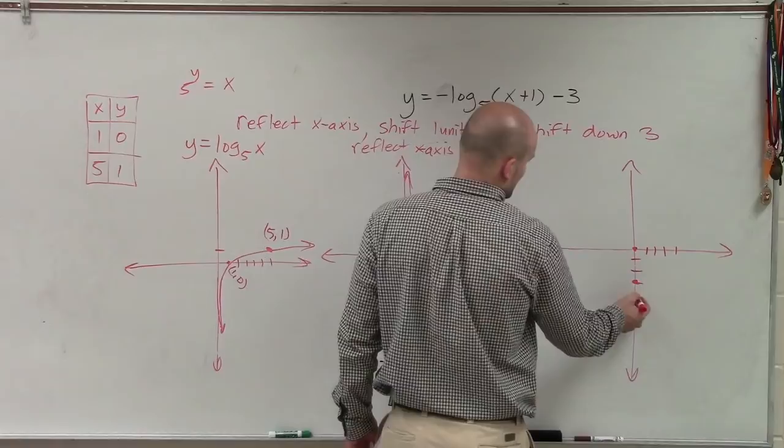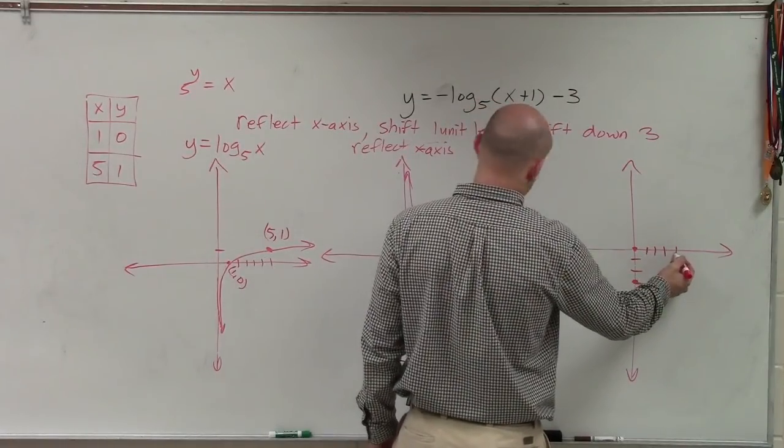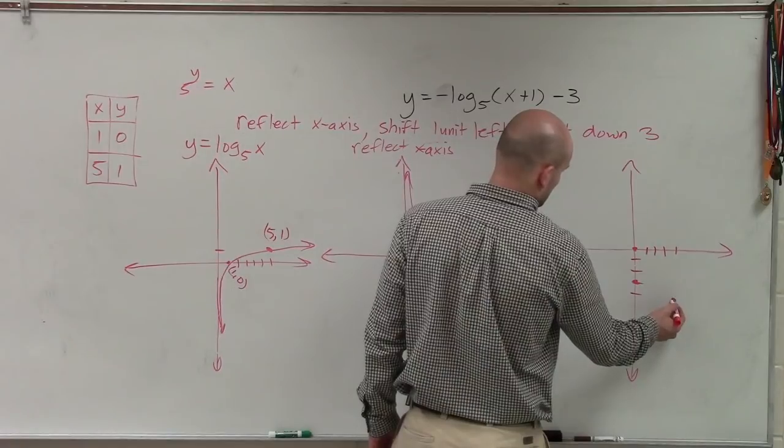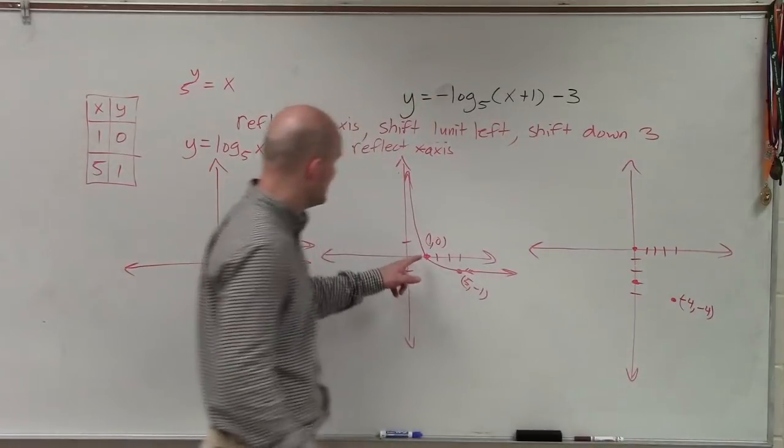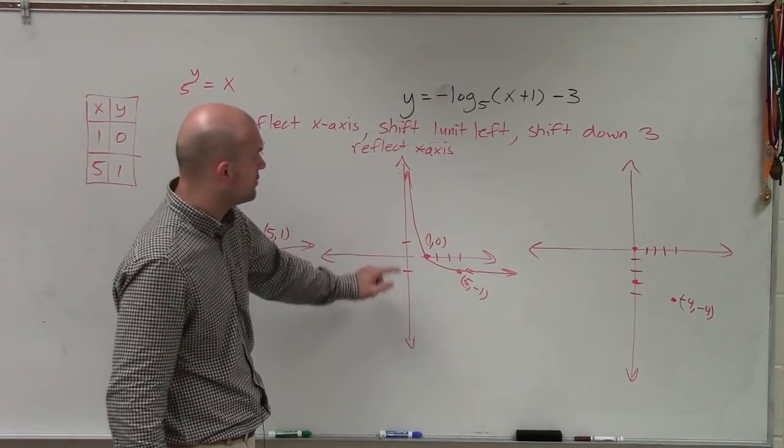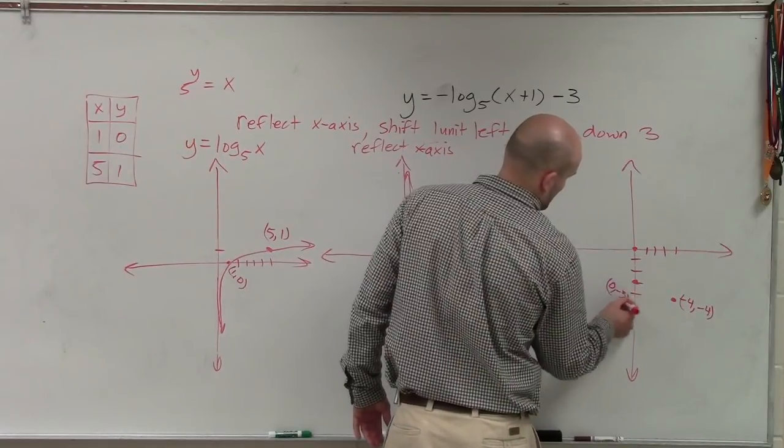So 1, 2, 3, 4. So that would now be at negative 4, negative 4. And then this point is shifted to 1. So it would be at 0, negative 3. Perfect.